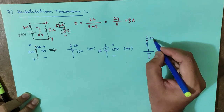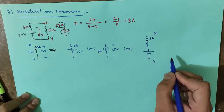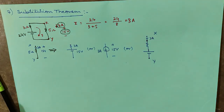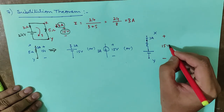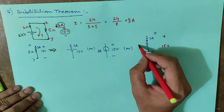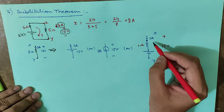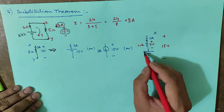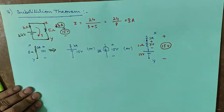The constraint is: the current through the branch must be 3 amperes, and the voltage across X and Y must be 15 volts. We can play with whatever combination we like as long as these are satisfied. For example, if we place a 1 ohm resistor, the voltage drop across it will be 3 volts, so the battery in series must be 12 volts to make the total voltage 15 volts.